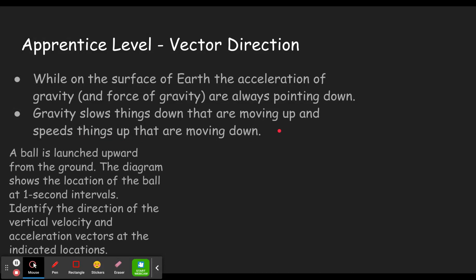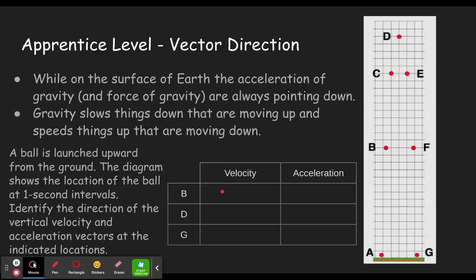So here's the first kind of question you'll see. A ball is launched upward from the ground. The diagram shows the location of the ball at one second intervals. Here's the diagram. So you can see it starts off at A. One second later, it's at B. One second later, it's at C, then D, then E, then F, then G. Identify the direction of the vertical velocity and acceleration vectors at the indicated locations.